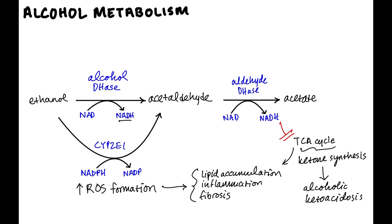What else gets broken down by these enzymes? It's not just ethanol — it can also be methanol, which is a wood alcohol and a poison, and ethylene glycol, which is found in antifreeze. These are poisonous. Methanol and ethylene glycol by themselves are not toxic; it's the metabolites that are toxic. So when treating methanol or ethylene glycol poisoning, we need to interfere with this metabolic process.